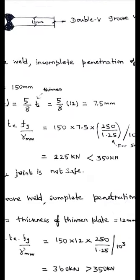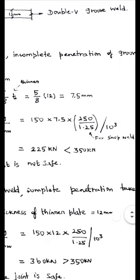Then gamma Mw is the partial safety factor for the weld. This value will be varied according to the fabrication place. If the fabrication is done at the shop the value has to be used as 1.25. If it is done at the field the value has to be used as 1.5. This value can be obtained from table 5 page number 30 in IS 800-2007.